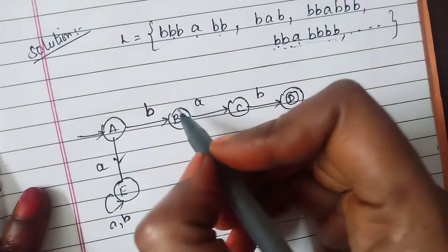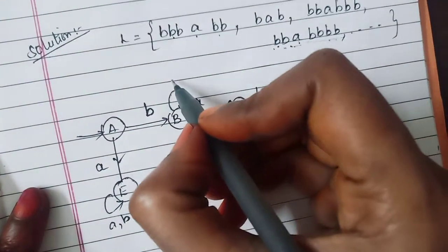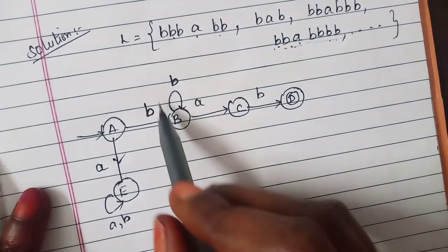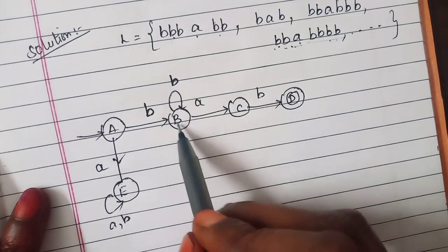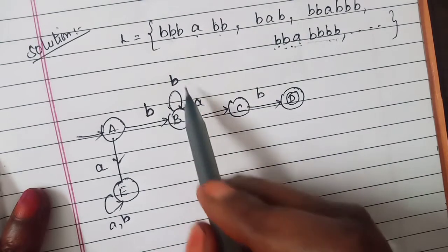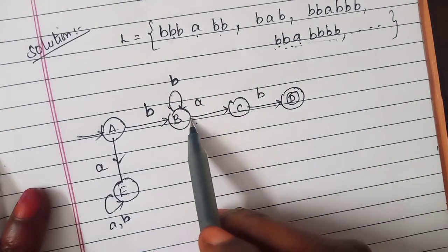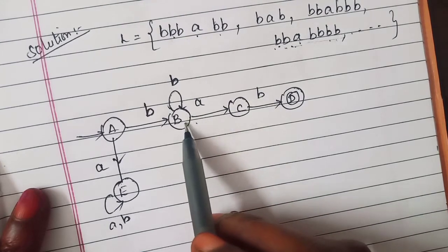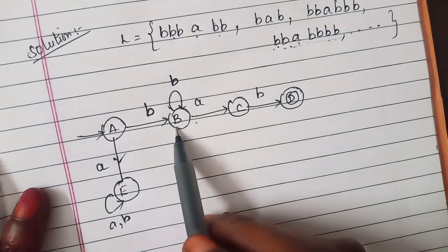After that here we will get any number of b's over here. That's why from state B you are getting this b.